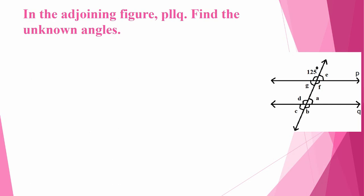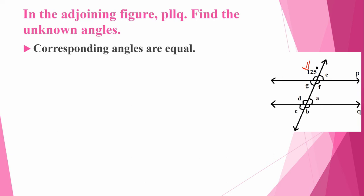See this problem: in the adjoining figure P is parallel to Q, find the unknown angles. P and Q are parallel and another line is crossing — so we can identify this is a transversal. We have to find the unknown angles. Eight angles are there and only one angle is given, that is 125 degrees. Using corresponding angles are equal: the corresponding angle for 125 degrees is angle D, so angle D is also 125 degrees.